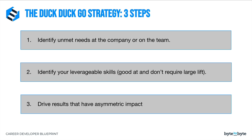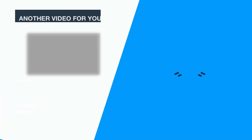To summarize this lesson: we're going to use the DuckDuckGo strategy to create that asymmetric impact, and it follows three steps. One: identify unmet needs at the company or on the team. Two: identify your leverageable skills. And three: drive results that have asymmetric impact.